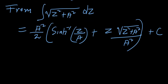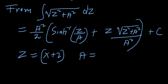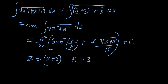From this, z is equal to x plus 2 and a is equal to 3. We can see that z squared is equal to (x+2) squared and a squared is equal to 3 squared, so z equals x plus 2 and a equals 3.